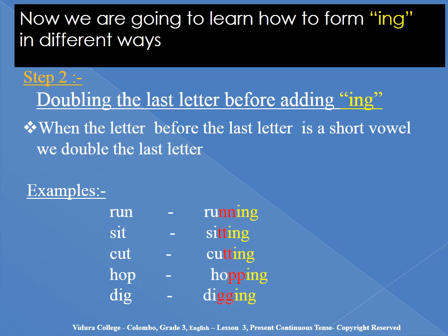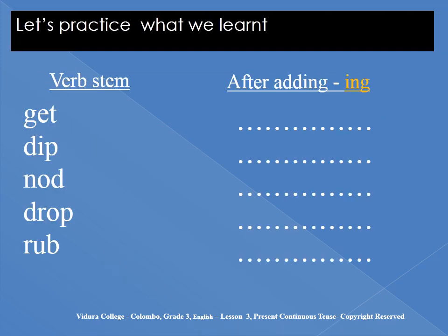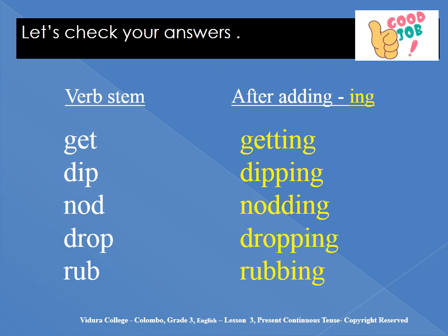Did you understand that? Right, now we can practice. Let's practice what we learned. I have given word stems — you can do after adding -ing: get, dip, nod, drop, rub. Are you ready to check the answers? Get → getting. Dip → dipping. Nod → nodding. Drop → dropping. Rub → rubbing. Good job.